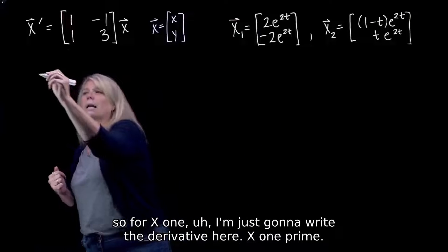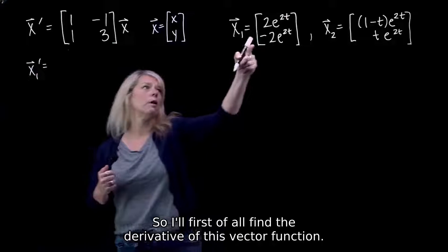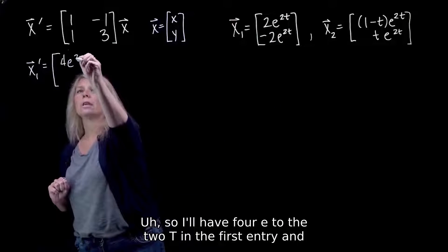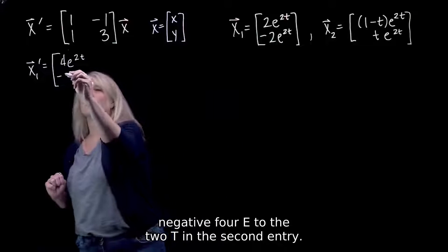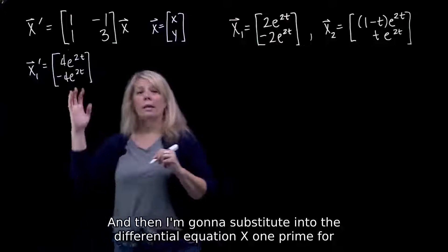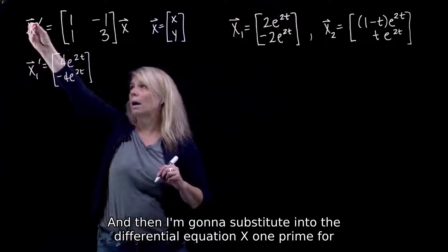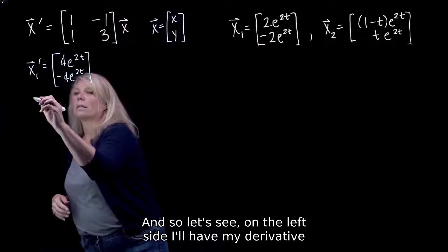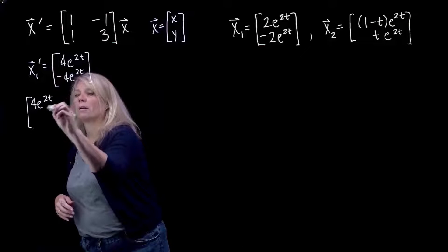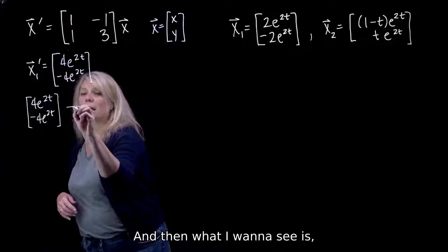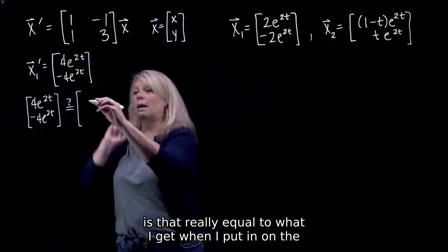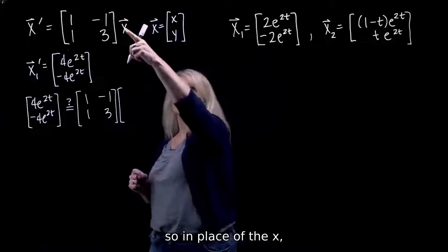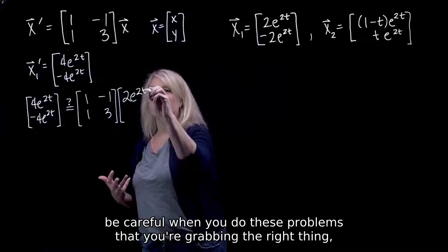For x1, I'm just going to write the derivative here — x1 prime. So I'll first find the derivative of this vector function. I'll have 4e to the 2t in the first entry and negative 4e to the 2t in the second entry. Then I'm going to substitute into the differential equation: x1 prime for the derivative equals this matrix times x1. On the left side I'll have my derivative. Be careful when you do these problems that you're grabbing the right thing — the derivative versus the original function.